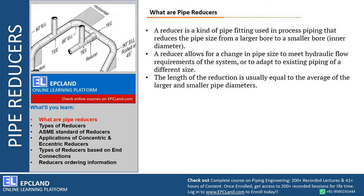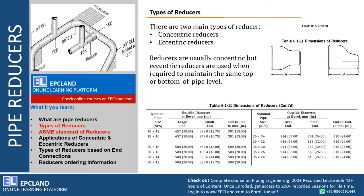Most of the time, the length of a reducer is the average of the larger and smaller diameter — if you add the larger and smaller diameter and divide by 2, you get the length. However, we use ASME standards to get the proper dimensions. ASME B16.9 gives us the dimensional details of these reducers. Basically there are two types: concentric and eccentric. We generally go for concentric type only unless there is a requirement to maintain the BOP or top of pipe.